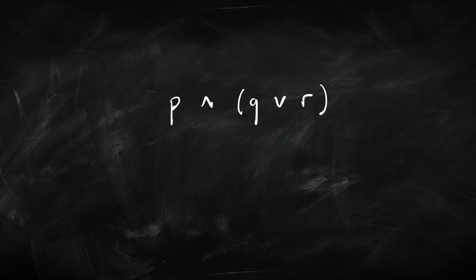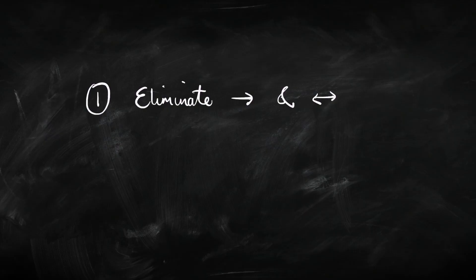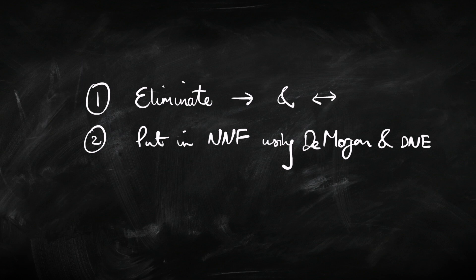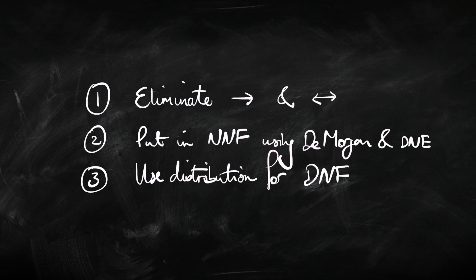Any sentence of propositional logic can be transformed into disjunctive normal form. Here's the example we just looked at that isn't in disjunctive normal form, but if we apply a distribution rule, we immediately get it in disjunctive normal form — it's a disjunction of conjunctions of literals. There's a three-step strategy: first, eliminate all the arrows and double arrows, rewriting them in terms of disjunction and negation. Second, put the sentence into negation normal form using De Morgan and double negation elimination. Third, use distribution to put it into disjunctive normal form. You may need to repeat that step a number of times.